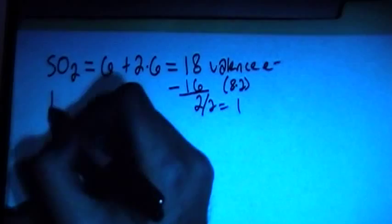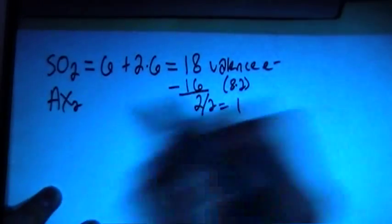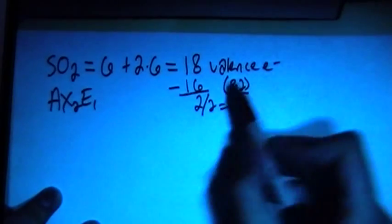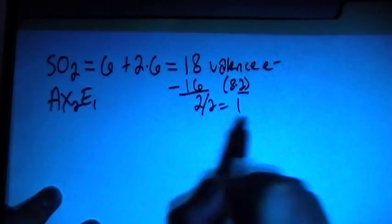So that means that this is going to be an AX2, this 2 comes from this 8 times 2, E1, where this is the 2 divided by 2, gives you 1.